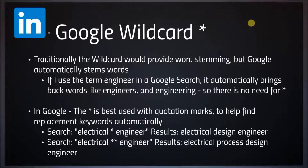One of my favorite methods is the wildcard in LinkedIn x-ray and Google. Traditionally, the wildcard — or asterisk — provided word stemming. For example, typing engineer followed by a wildcard in a Google search would bring back engineers or engineering, stemming every version of that word. However, Google now automatically stems every word, so unless you do a verbatim search, typing engineer will also bring back engineers or engineering. There's no longer a need to use the wildcard for stemming.